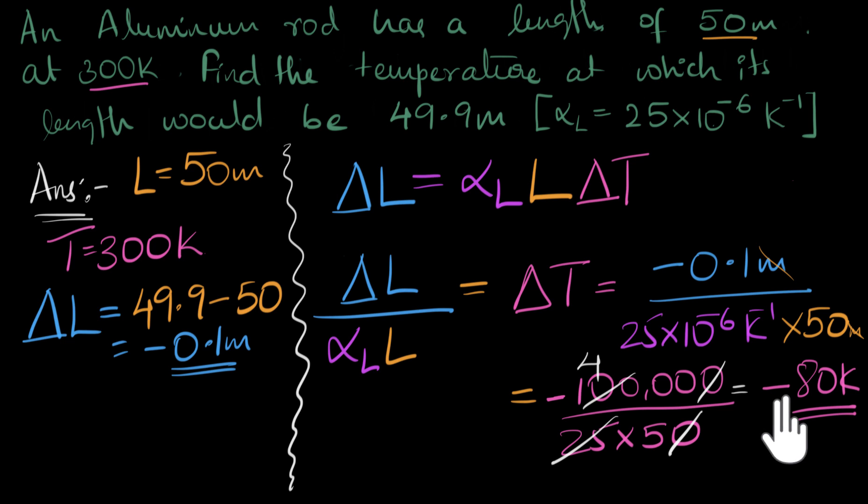What does the minus sign say? Well, the minus sign is just saying that we have to decrease the temperature by 80 Kelvin. And that makes sense, because we already discussed that we have to cool it down. So we have to decrease the temperature by 80 Kelvin. But the question is, what is the final temperature?